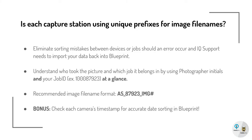If ImageQuicks product support needs to look through your logs, create a data set, and assist you with importing that data back into Blueprint — being able to understand who took the picture and which job it belongs in at a glance is extremely powerful. That's why we recommend the image file name format of photographer initials, the job ID number, and then the image sequence number. As a bonus, you'll want to make sure that each camera's timestamp is accurate for proper date sorting in Blueprint.